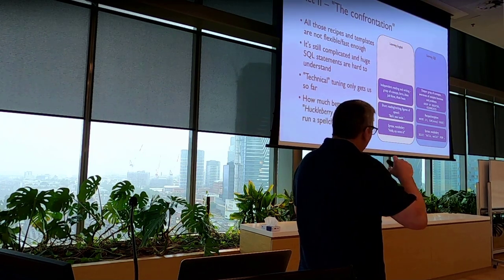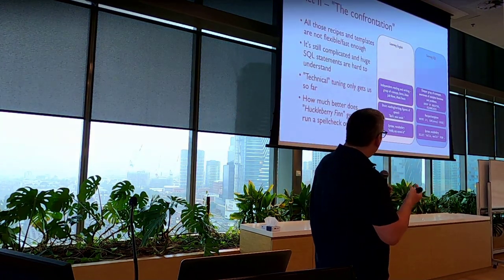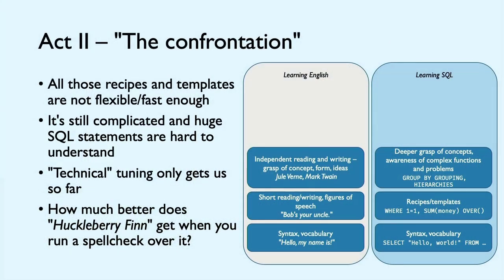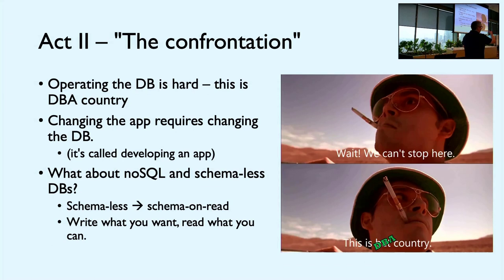Technical tuning can also only get you so far. Yes, you can add another index on a table and that makes something faster — but if the query is rubbish, that might not help after all. Think about it: how much do you improve a novel by Mark Twain when you just run a spell checker over it? The point is not that the grammar is right. You basically throw it over the fence, let the DBA sort it out, but you can't be bothered with that — it's DBA country.